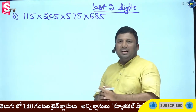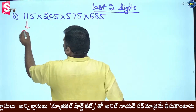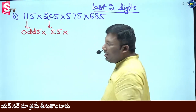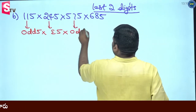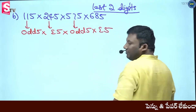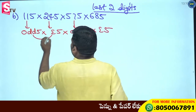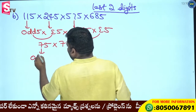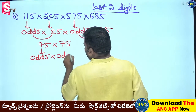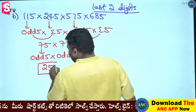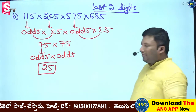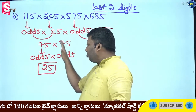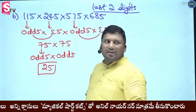Multiply these four numbers. 11 is odd number ending with 5. 24 is even number ending with 5. 57 is odd number ending with 5. 65 is even number ending with 5. Odd 5 into even 5 gives 75. Again, 8 is even — odd 5 into even 5 gives 75. Then 7 is odd — odd 5 into odd 5 gives last two digits 25. Second example: odd 5 into even 5 gives 75. Odd 5 into odd 5 gives 25.